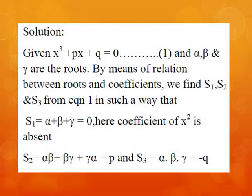We know that s₁ = σα, that is the sum of roots α + β + γ = (−1)¹ × (coefficient of x²). Since the coefficient of x² is absent in the given equation, s₁ = 0. Next, s₂ = σαβ = αβ + βγ + αγ = (−1)² × (coefficient of x) = p, so s₂ = p. Finally, s₃ is the product of the roots: α × β × γ = (−1)³ × (constant term) = −q.